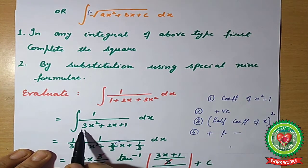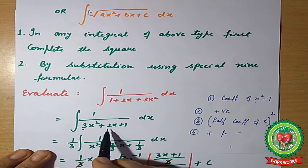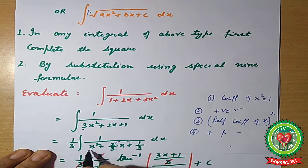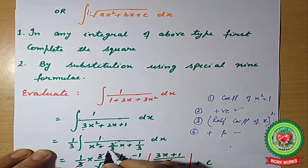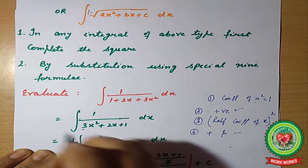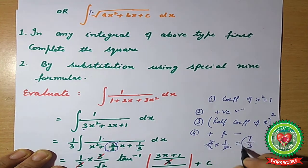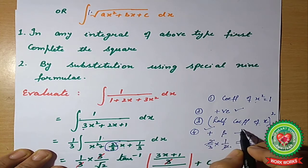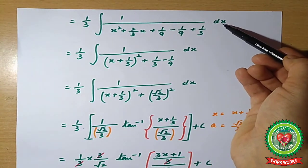We evaluate ∫ 1/(1 + 2x + 3x²) dx. Rearranging: ∫ 1/(3x² + 2x + 1) dx. Applying the steps: take 3 as common so the coefficient of x² becomes 1, giving (1/3) ∫ 1/(x² + (2/3)x + 1/3) dx. Half of 2/3 is 1/3; squaring gives 1/9. We add and subtract 1/9 inside, yielding (1/3) ∫ 1/((x + 1/3)² − 1/9 + 1/3) dx.